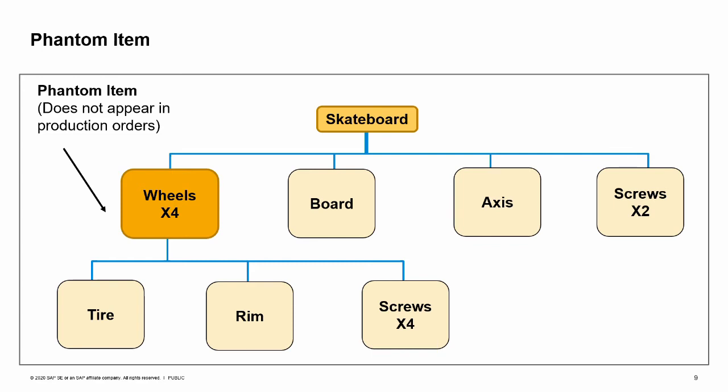Requirements of bill of materials can vary between different departments at the same company. The engineering department could create a multi-level bill of materials to define an engine; the manufacturing department could then include this bill of materials as a single phantom item. Note that it is not possible to add root stage lines to a BOM containing a phantom item.